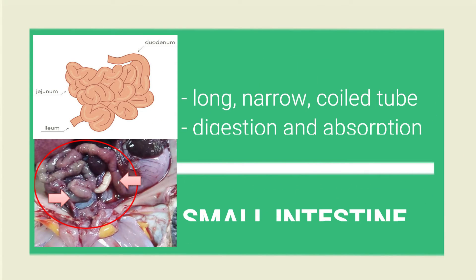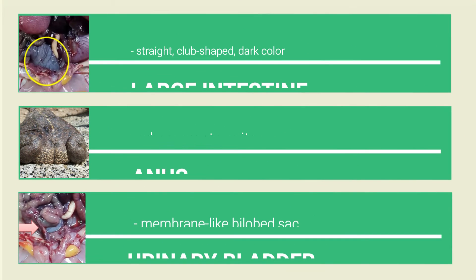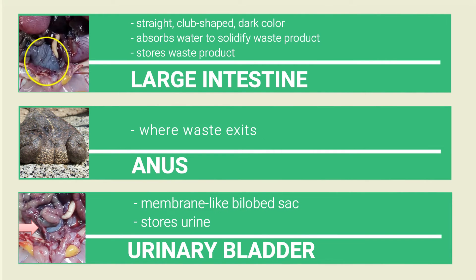Then we have the small intestine, where digestion and absorption happen. Here is its duodenum, where the common bile duct enters, then its ileum. The mesenterium or mesentery proper suspends the small intestine to the dorsal body wall. Connected to the ileum is the large intestine, which ends with the anus or vent. It absorbs water to solidify the wastes. The large intestine consists of its rectum and cloaca. Attached to the ventral side of the cloaca is the urinary bladder, which mainly stores urine. The large intestine is suspended to the body wall by the mesorectum or mesocolon.